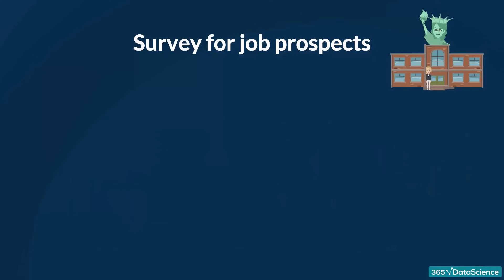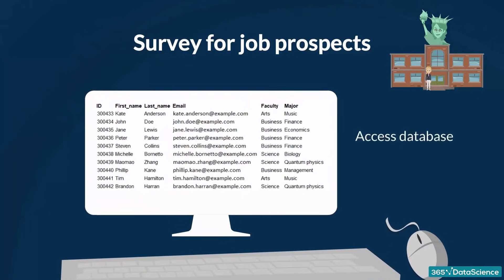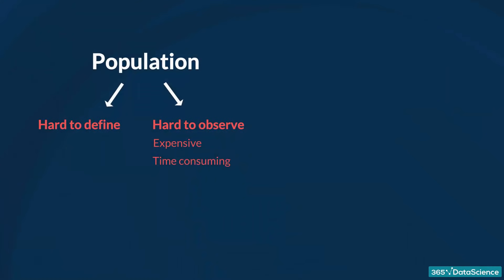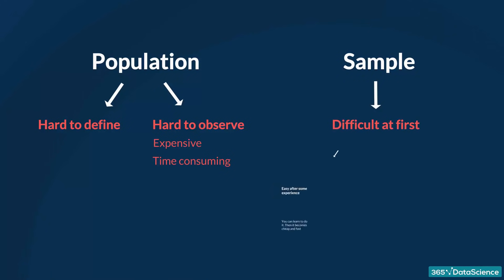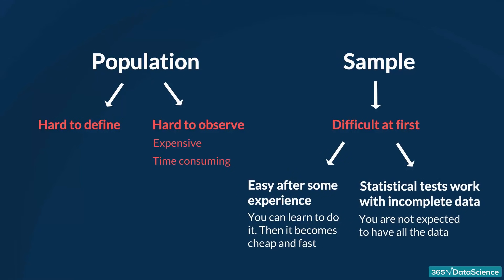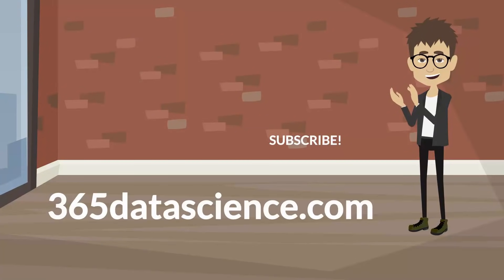By now, you must be wondering how to draw a sample that is both random and representative. Well, the safest way would be to get access to the student database and contact individuals in a random manner. However, such surveys are almost impossible to conduct without assistance from the university. We said populations are hard to define and observe, and we saw that sampling is difficult. But samples have two big advantages: after you have experience, it is not hard to recognize if a sample is representative, and statistical tests are designed to work with incomplete data. Thus, making a small mistake while sampling is not always a problem.